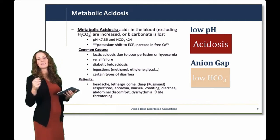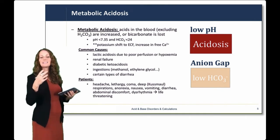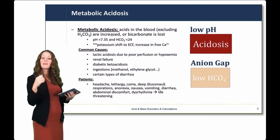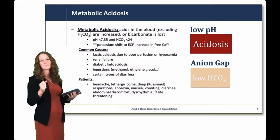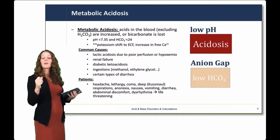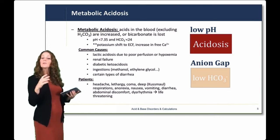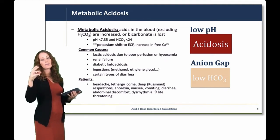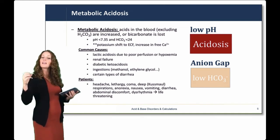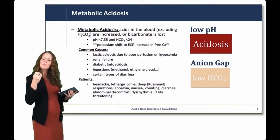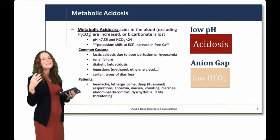Common causes of metabolic acidosis include lactic acid buildup because of poor perfusion or hypoxemia, renal failure, and diabetic ketoacidosis — one of the most common causes. There can also be ingestion of an acid or certain types of diarrhea, particularly diarrhea that causes large losses of bicarbonate. We'll learn in the GI system that there's a lot of bicarbonate secretion in the GI tract, so you can lose bicarbonate, causing an acidotic state. Patients will report headaches and lethargy, and for metabolic acidosis there's a deep, particular respiration called Kussmaul breathing.